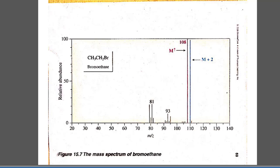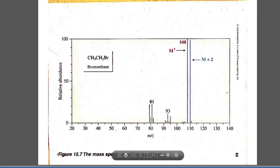Interestingly, fragmentation of bromoethane shows cleavage of the carbon-bromine bond, but we do not see a peak at 29 (the ethyl group). Instead, we see peaks at 79 and 81 — meaning the bromine retains the positive charge rather than the carbon. This is because primary carbocations are extremely unstable; it is more favorable to form a bromocation. That concludes the discussion of mass spectrometry. Please let me know if you have any questions, and we will do problems in class.